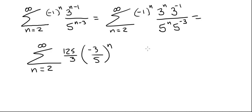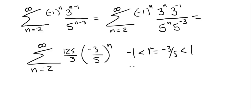Now this looks like a geometric series with r equal to -3/5, which is the common ratio between terms. Since |r| is less than 1 and greater than -1, this series will converge.